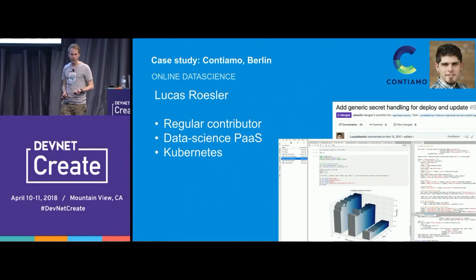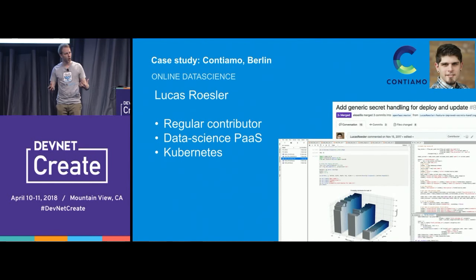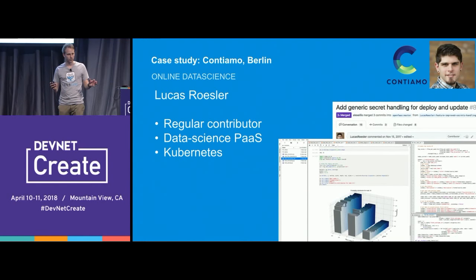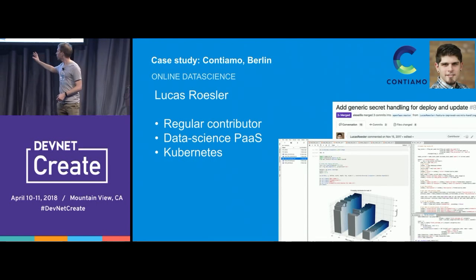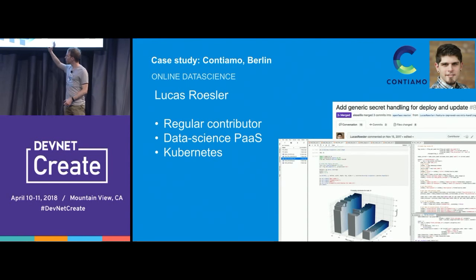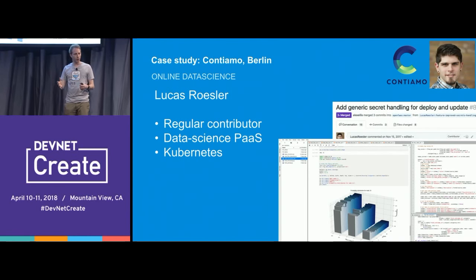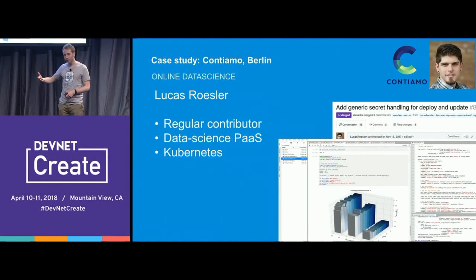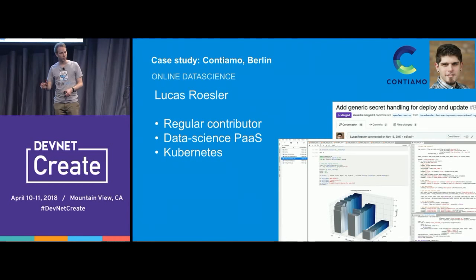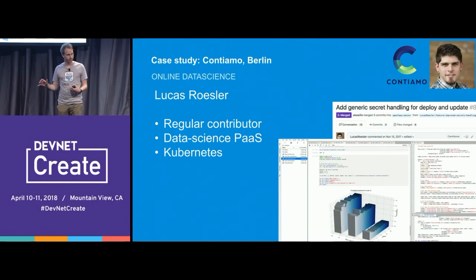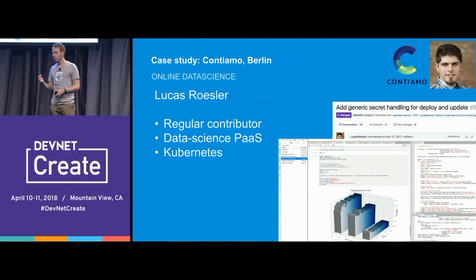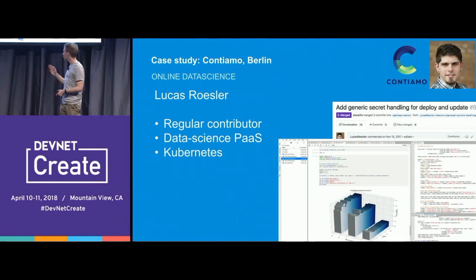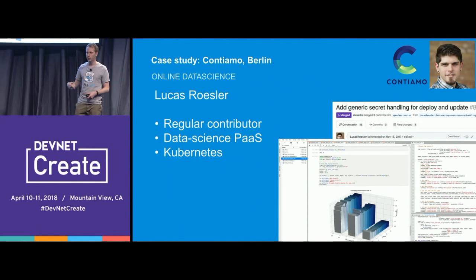Lucas Rosler works at Contiamo out of Berlin. They're using OpenFaaS to build a data science PaaS. Jupyter Notebooks let you define tests and simulations and get graphs out. They're taking this and building it continuously so you can share results within your team — once you have an algorithm or optimization to test, they give you public URLs for it, automatically built through OpenFaaS.